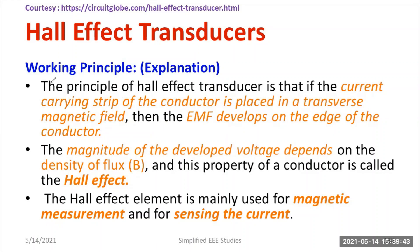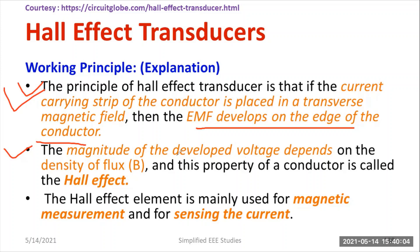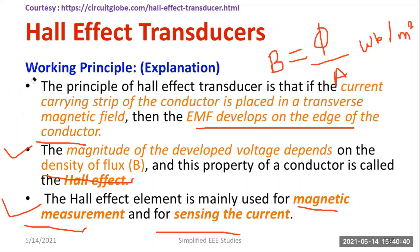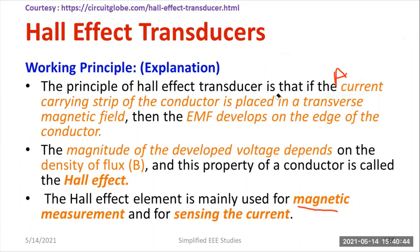The principle of the Hall effect transducer is that if a current-carrying strip of conductor is placed in a transverse magnetic field — meaning both are perpendicular — then an EMF develops on the edge of the conductor. The magnitude of the developed voltage depends on the flux density (flux per unit area, expressed in Weber per meter square). This property of the conductor is called the Hall effect, and the Hall effect element is mainly used for magnetic measurement and sensing current.